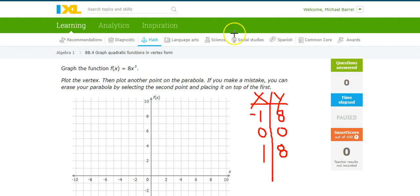I have to exit out of this drawing mode so I can graph it, but I'm looking at 0, 0, and 1, 8. So 0, 0, 1, 8. There's my graph.